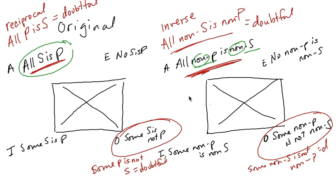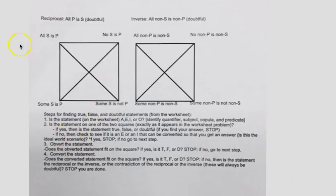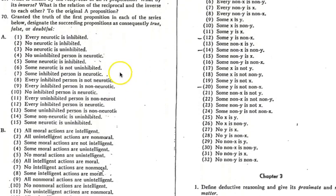Hopefully you have this in your notes. It looks like a mess on screen, but you should have a clean copy in your notes. You can watch these videos a couple of times if you need to go over it again. Make these two squares — your original and your full contrapositive squares of opposition. Next time we're going to go over those examples: 'every neurotic is inhibited.'